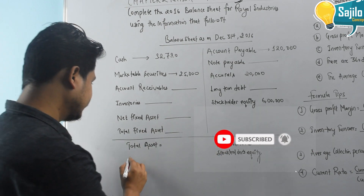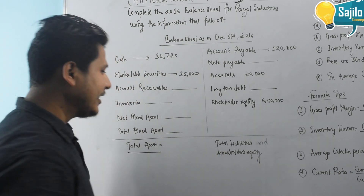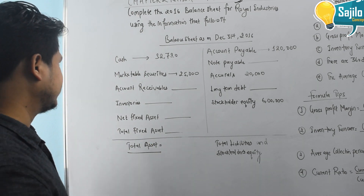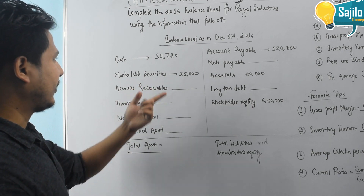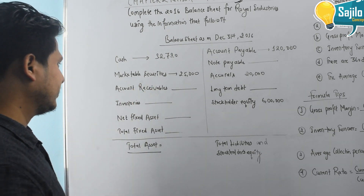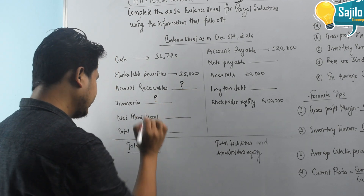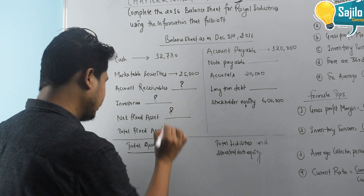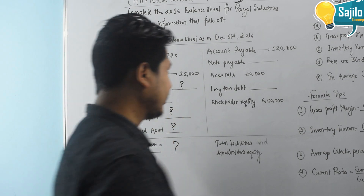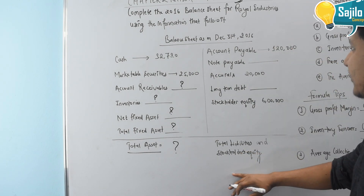The balance sheet has two sides. The asset side and the liability and shareholder equity side. On the asset side: cash is $32,720, marketable securities is $25,000. Account receivable, inventory, net fixed assets, and total fixed assets are all unknowns to be determined.